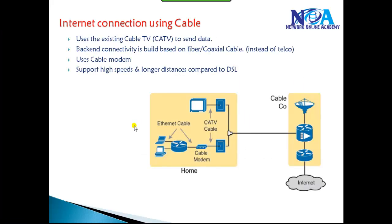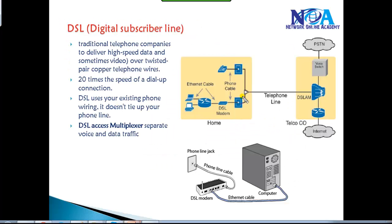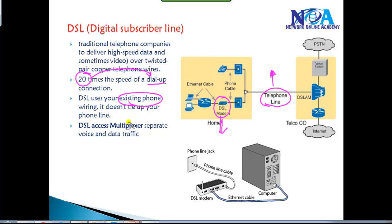DSL provides internet over existing telecom telephone lines using a DSL modem. It supports more than 20 times better bandwidth compared to dial-up connections. It doesn't tie up your telephone line because voice and data signals are kept separate. A DSLAM — DSL Access Multiplexer — separates your voice and data traffic, converting and sending data signals to the internet and voice signals to voice devices.